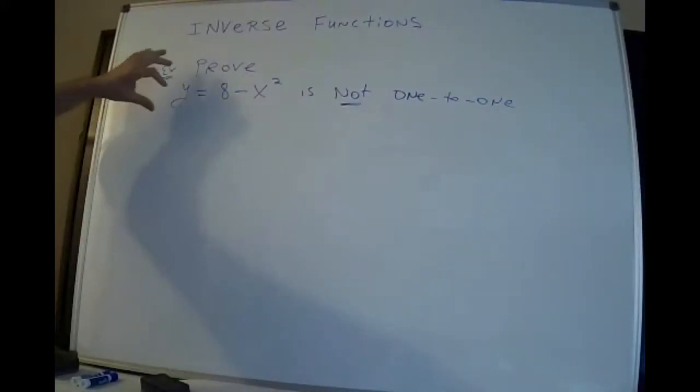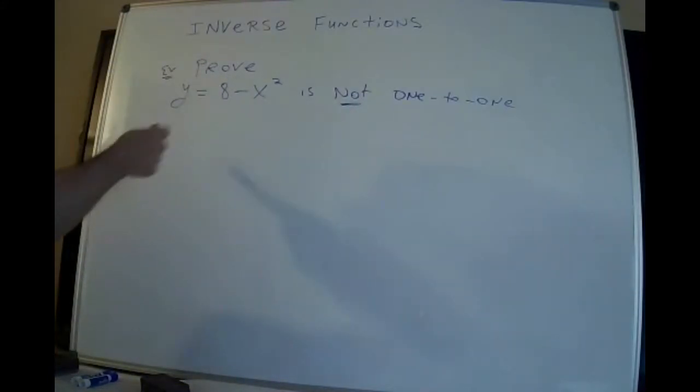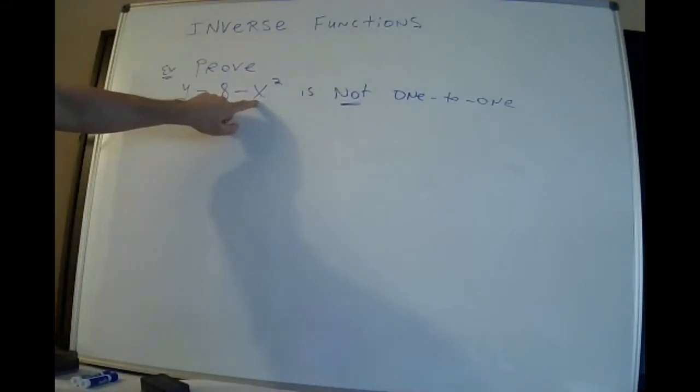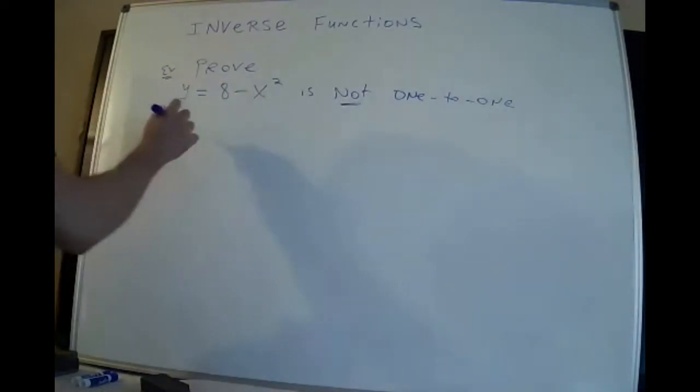Alright, so the first idea: if you're going to find an inverse and you're going to go in the opposite direction, your y values can't repeat, so your function has to be one-to-one. I want to show you that if you have an x² in the function, if you have an even power, the function is not going to be one-to-one. Now how would you show it? Well, very simple.